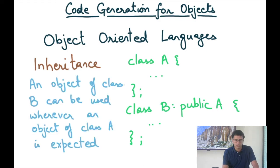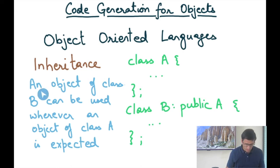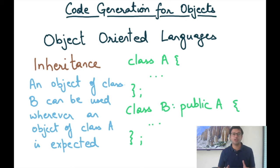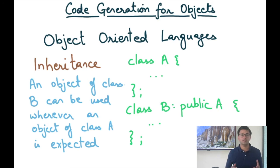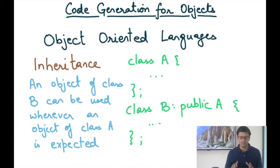The first principle of an object-oriented language is that an object of a derived class B can be used wherever an object of class A is expected. From a code generation point of view, this means that any code generated for an object of class A should work unmodified for an object of class B — which is a little difficult to achieve, as we'll see in this and the next few modules.